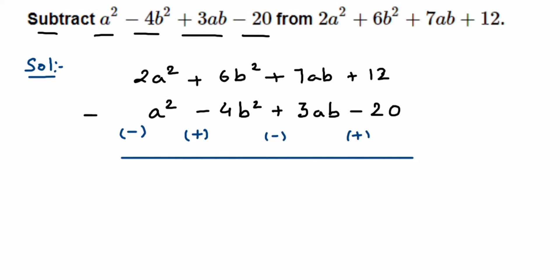So here I have 2a² and then -a². So minus you should take here, not the plus. So my 2 - 1 will be 1, so I'll get 1a² or you can just simply write down a². Remember, a² doesn't have any coefficient, so it will be 1.